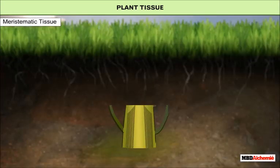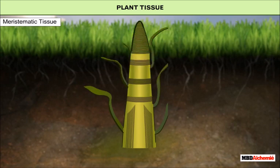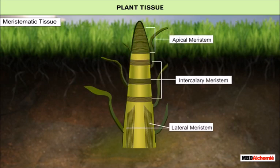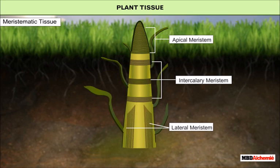Depending upon location in the body of the plant, the meristems may be apical, intercalary and lateral. Apical meristem is present at the growing tips of stems and roots and increases their lengths. Intercalary meristem is the meristem at the base of the leaves or internodes on twigs. Lateral meristems are located along the lateral sides of stems and roots.